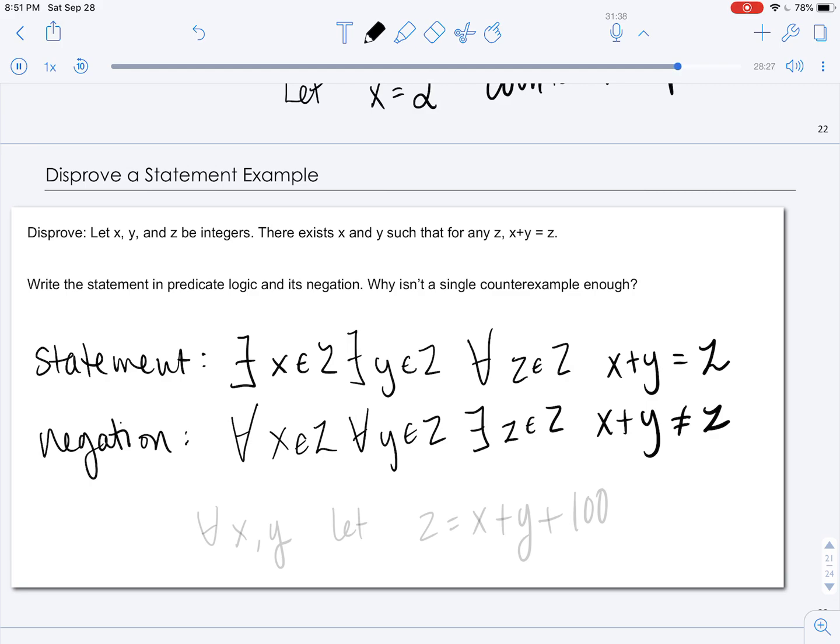Now we need to consider why won't a counterexample suffice. The reason why a counterexample won't suffice is because the negation of the statement is for any integers x and y, there has to exist this z that does not equal it.